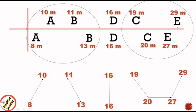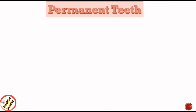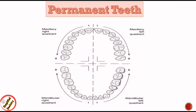Now let's move on to permanent teeth. According to Palmer notation, permanent teeth are numbered 1 to 8 in each quadrant, beginning from the midline moving backward. So 1 is central incisor, 2 is lateral incisor, 3 is canine, 4 is first premolar, 5 is second premolar, 6 is first molar, 7 is second molar, and 8 is third molar.